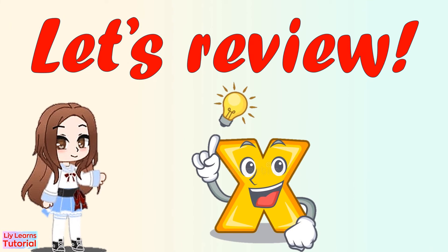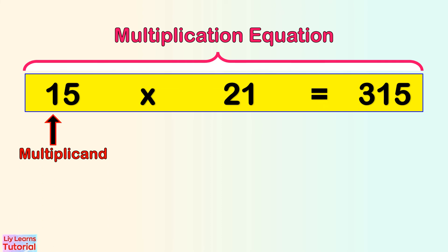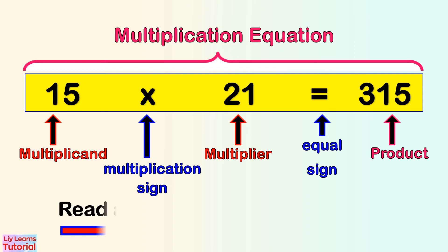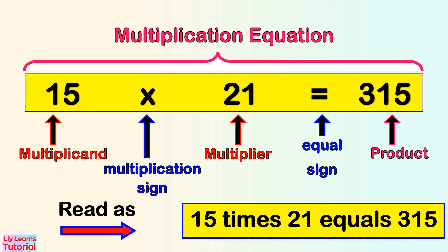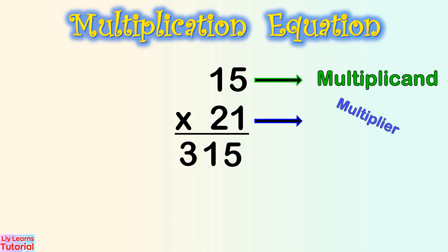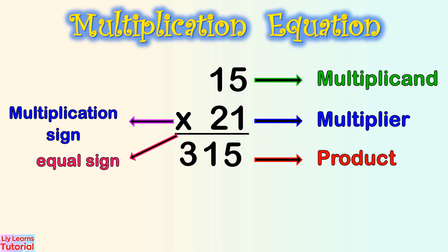Let's review the parts of a multiplication equation. 15 is the multiplicand, 21 is the multiplier, and 315 is the product. This is the multiplication sign and this is the equal sign. We can also rewrite 15 times 21 in column form, where 15 is the multiplicand, 21 is the multiplier, and 315 is the product.